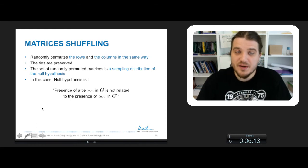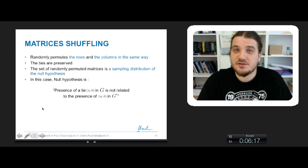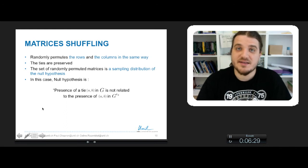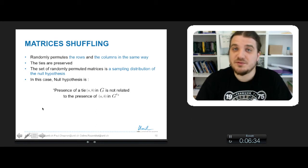Matrix shuffling is about permuting rows and columns in the same way. If you do that, the ties are preserved. You can shuffle the matrix in very different ways, so you will produce a group, a list of permuted matrices that will produce a sampling distribution. And this sampling distribution corresponds to the null hypothesis distribution.